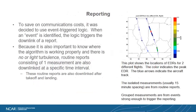To save on communication costs, we use an event-triggering logic: when an event is identified, the logic triggers a downlink of a report. When there's no or very light turbulence, routine reports are still sent so we can interpolate between events. On the left side of the figure, the aircraft is experiencing little turbulence and you see only routine reports every 15 minutes. On the northbound route there is actual turbulence, yielding clusters of data that capture the whole event.